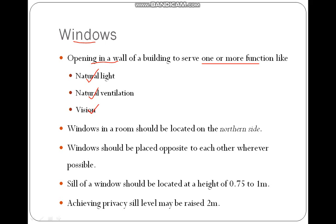If possible, windows should be located on the northern side, which is the best orientation. Windows should also be placed opposite to each other wherever possible — if one window is on the northern side, another could be kept on the straight opposite southern side so that air can flow very easily. The sill of the window should be kept at a height of 0.75 to 1 meter.